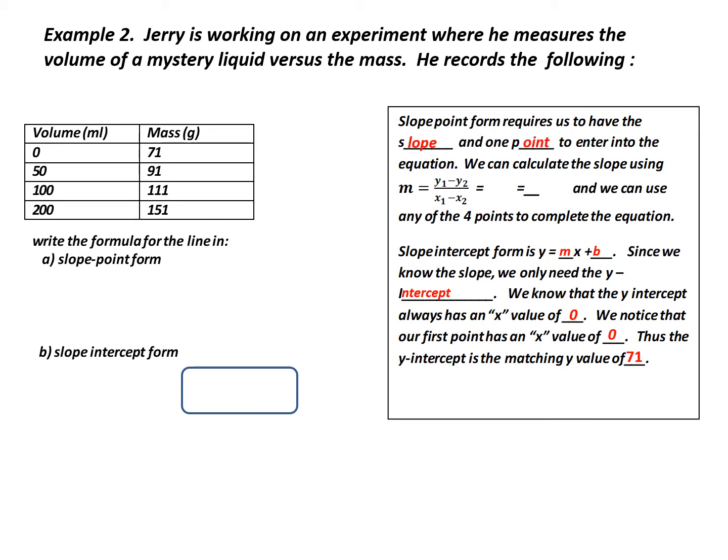So how do we calculate the slope? We aren't given a graph, but we are given four entries. Well, if you look at these entries, you'll realize that these are actually coordinates where the volume represents my x or independent variable and mass represents my y or dependent variable. So I have four points that allow me to calculate the slope. Because I've got points, I'm going to use the point formula (y₁ - y₂) / (x₁ - x₂).